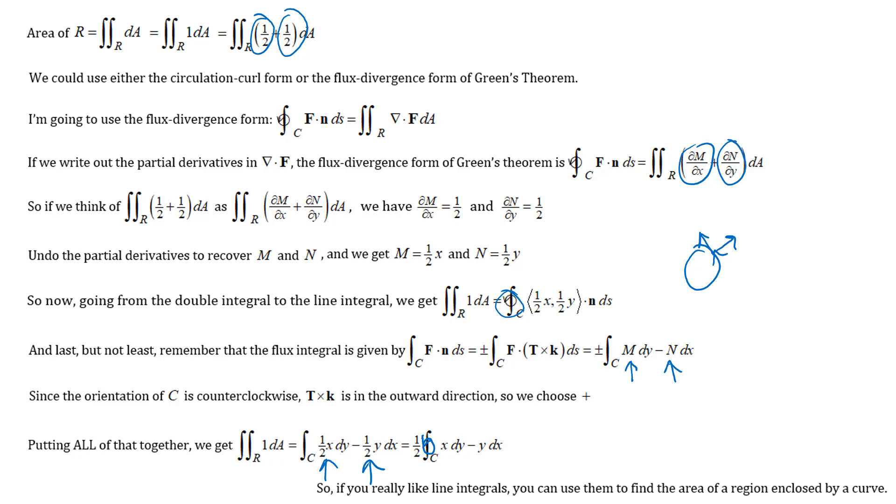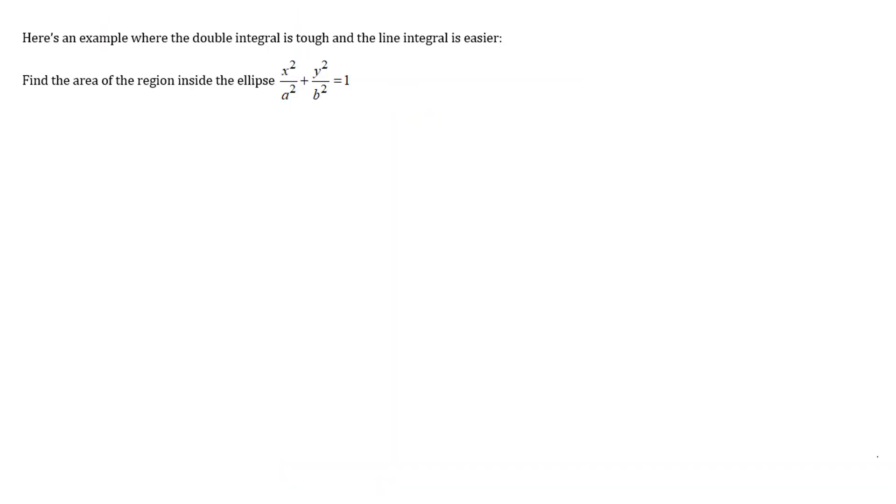So if you really love line integrals you can use them to find the area of a region enclosed by a curve. It would be not my advice to do that in most cases. Most cases a double integral is easier. But we're going to look at an example where it's actually easier to use the line integral. So here we're going to find the area of a region inside just a generic ellipse. And so let's go ahead and sketch a little picture of the ellipse here. So the ellipse would have x-intercepts at a and negative a and y-intercepts at b and negative b. And I want to find the area enclosed by that.